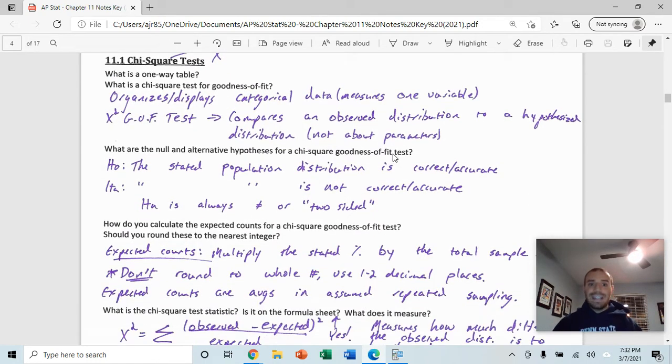So what is a chi-squared goodness of fit test and what is a one-way table? When we're talking about a chi-squared goodness of fit test, what it does is it organizes and displays categorical data. We're measuring one variable and what we're looking at is the distribution of that variable. For example, when we go through the M&M question, we're looking at what is the distribution of colors of the M&Ms. We're measuring that one variable, in that case M&M color, and we're looking at what is the percentage of each of those.